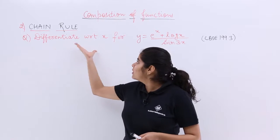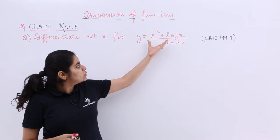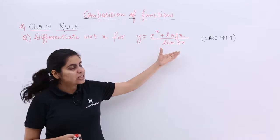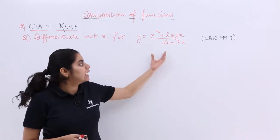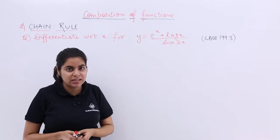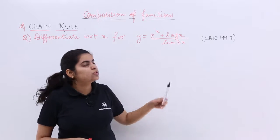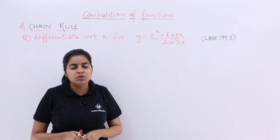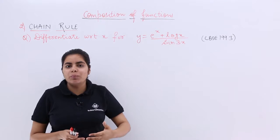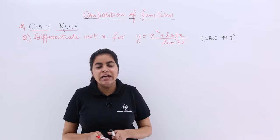It says: differentiate with respect to x, where y is equal to e raised to the power x plus log x upon sin 3x. As you can see, the numerator has two terms and the denominator has one term — numerator upon denominator — which means the quotient rule is what we have to apply.